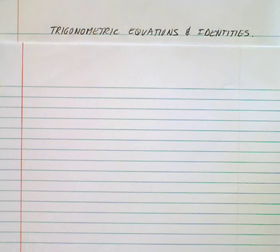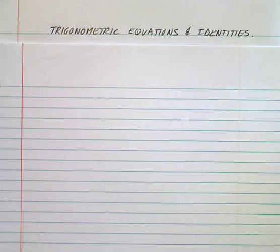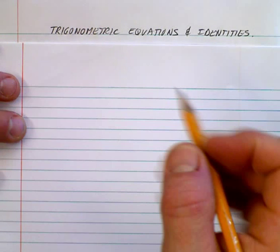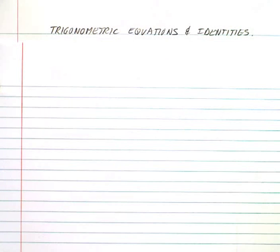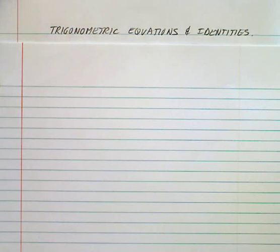Here we go, folks. This is chapter 6, 6.1. We're going to be looking at trig identities and what we call trig equations and identities. A trig equation and a trig identity have a bit of a difference.